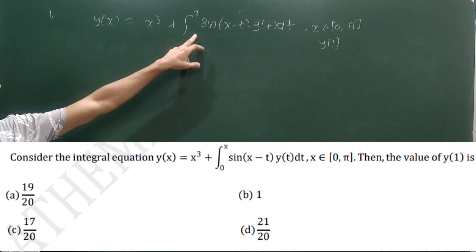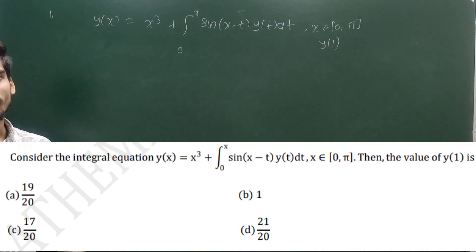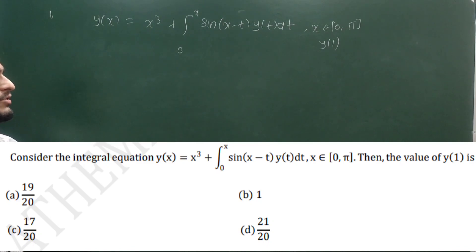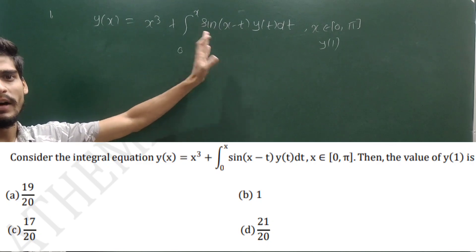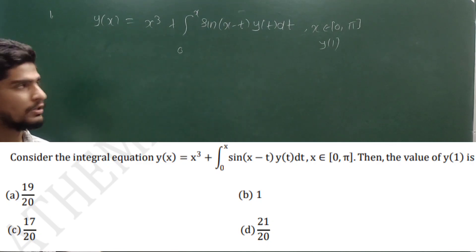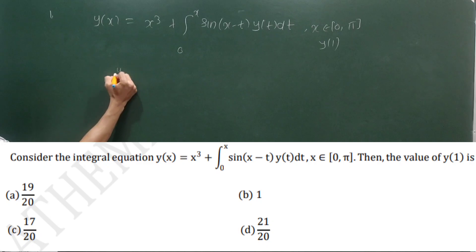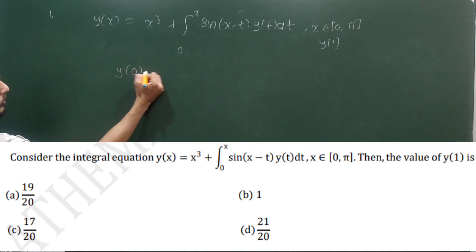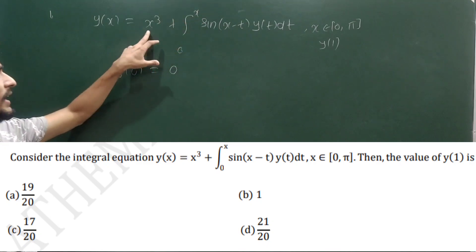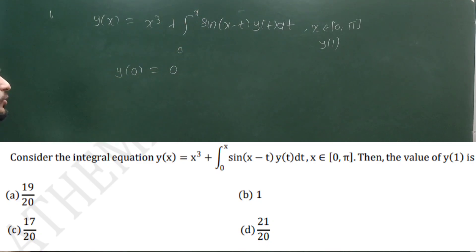Every Volterra equation converts into an initial value problem — an ordinary differential equation. This is the easy method, whereas using the resolvent kernel or other methods may be lengthy in the examination hall. Clearly, y(0) = 0 because the integral runs from zero to zero, making that part zero, and x³ is also zero at x = 0. So y(0) = 0.